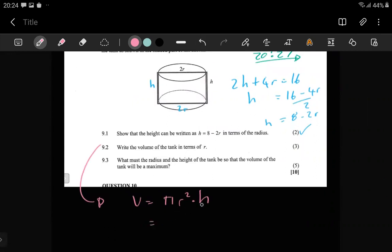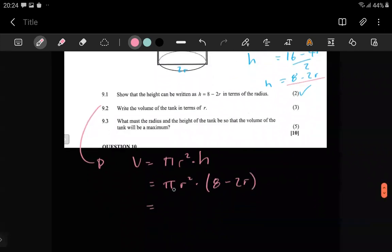Doing that was just a matter of replacing h with this if you're gonna write it in terms of r. The reason I'm doing all this is because there's no way we can do 9.3 without these questions. Multiplying inside, this is what we have.